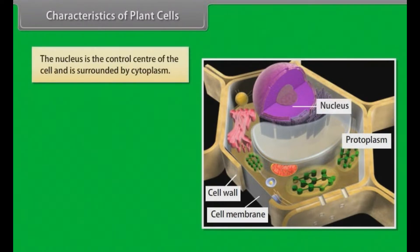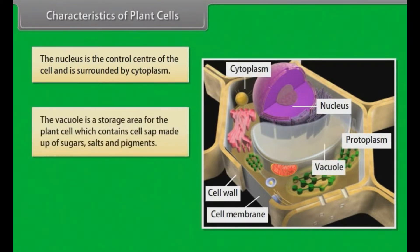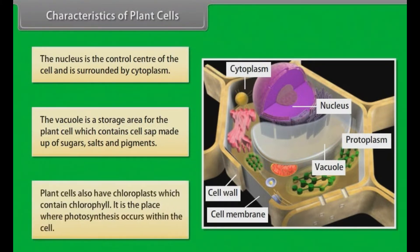The nucleus is the control center of the cell and is surrounded by cytoplasm. The vacuole is a storage area for the plant cell, which contains cell sap made up of sugars, salts, and pigments. Plant cells also have chloroplasts, which contain chlorophyll — it is the place where photosynthesis occurs within the cell.